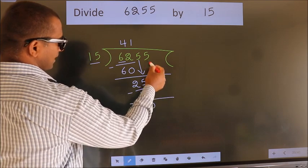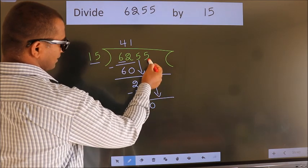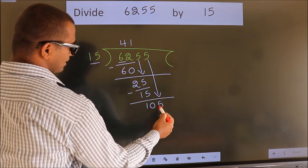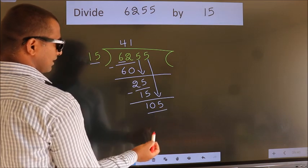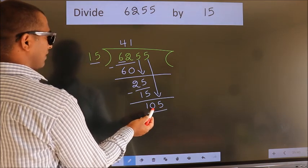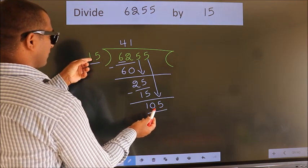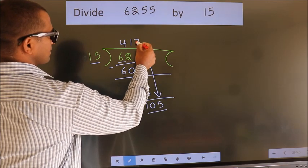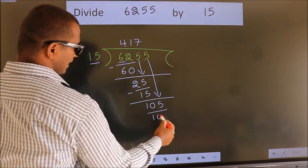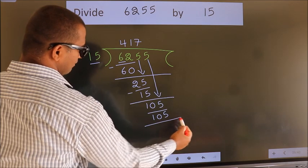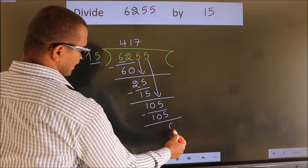After this, bring down the beside number. So 5 down. So 105. When do we get 105? In the 15 table, 15 sevenths, 105. Now we subtract. We get 0.